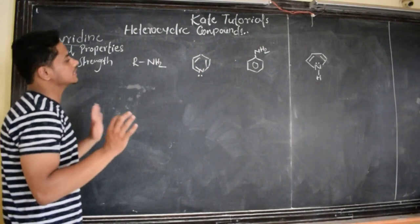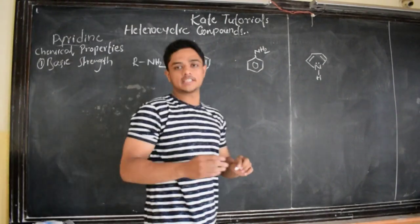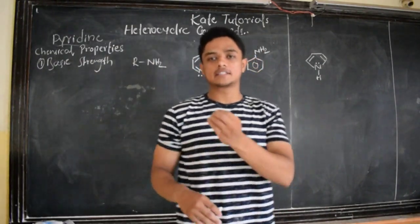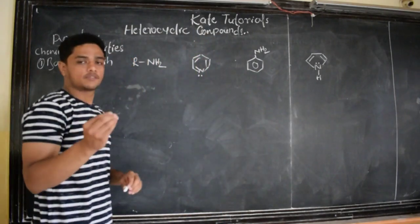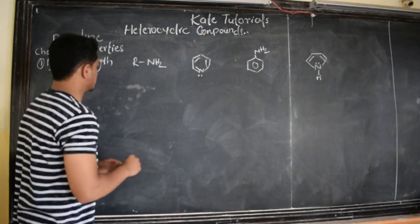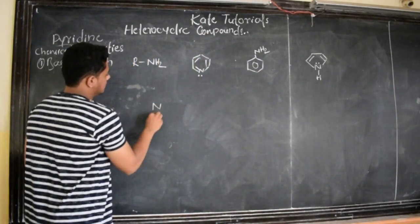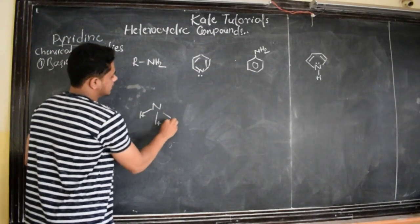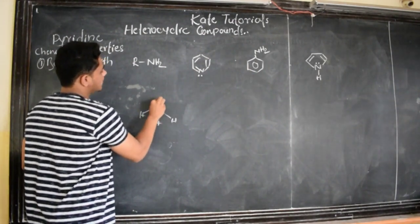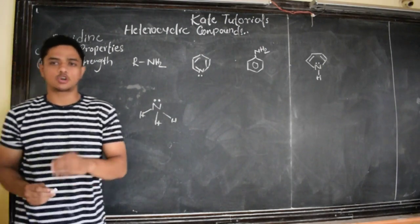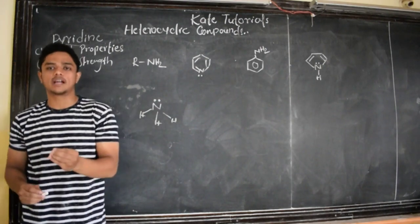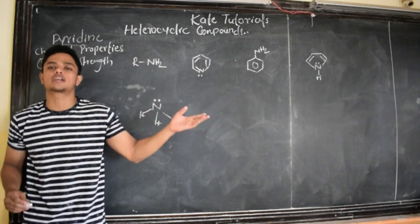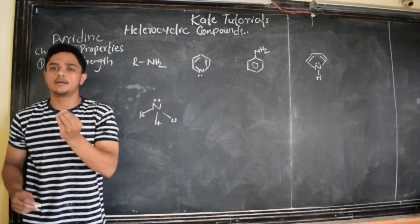So what is the basic strength? Which is more basic and which is least basic? Before going to that, let us know some basic phenomena of basic strength. This is NH₃ — ammonia. It has a lone pair of electrons. The one which has a lone pair of electrons and which is able to donate that lone pair to another is called basic.